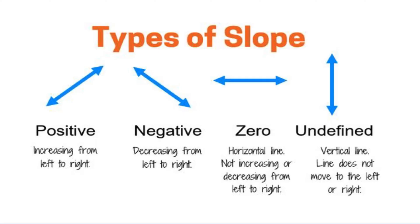There are four types of slope. If the graph is increasing from left to right, there is a positive slope. If the graph is decreasing from left to right, the slope is negative.